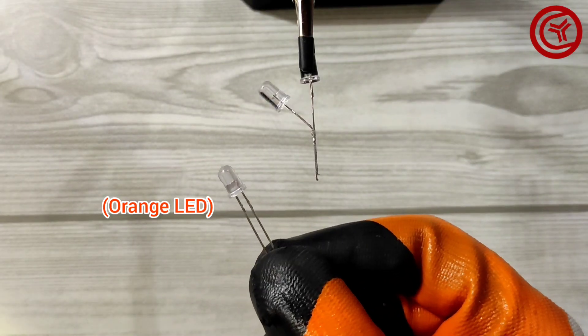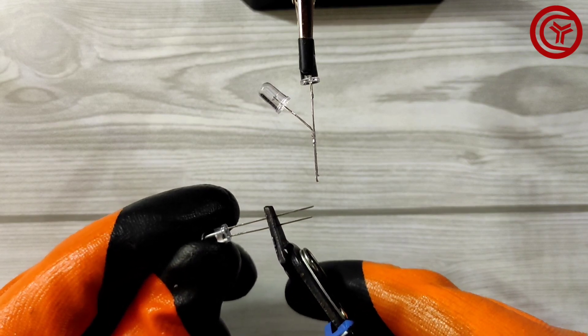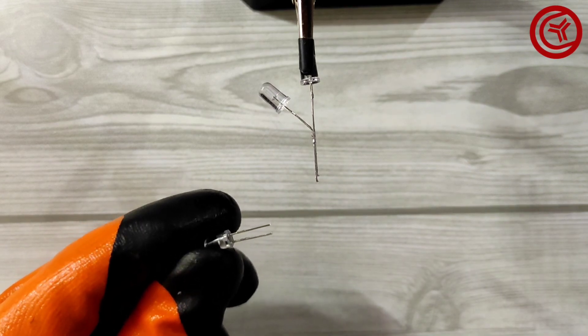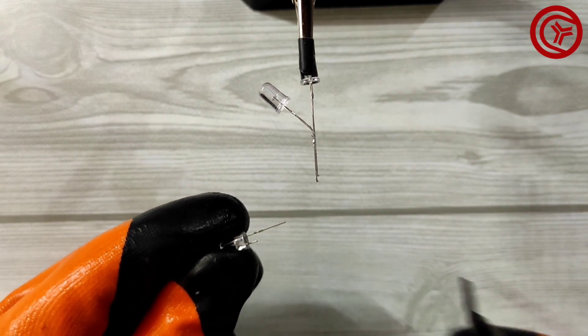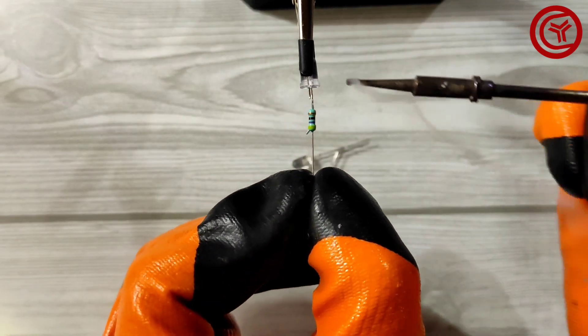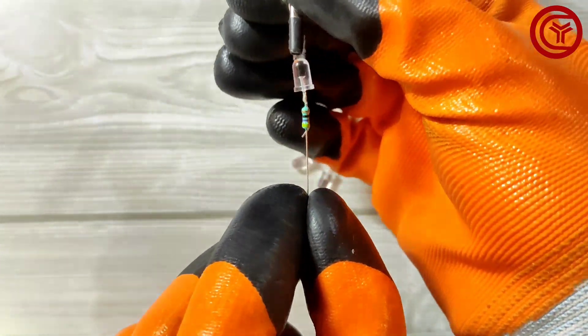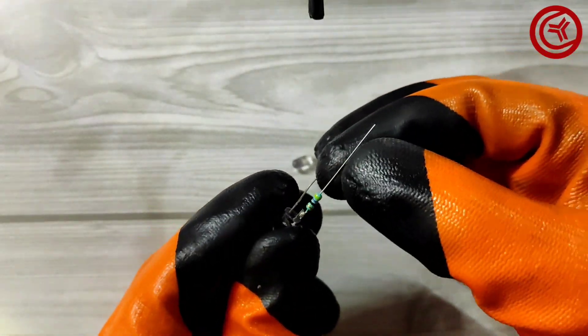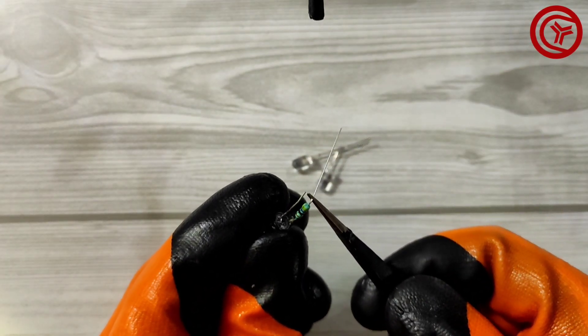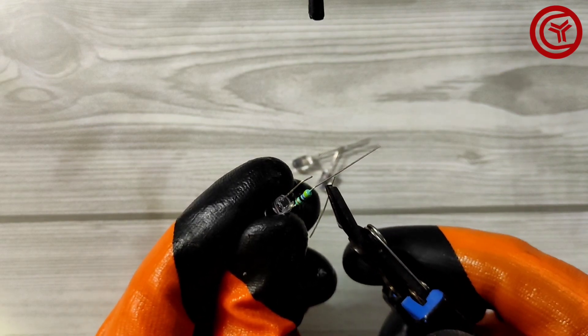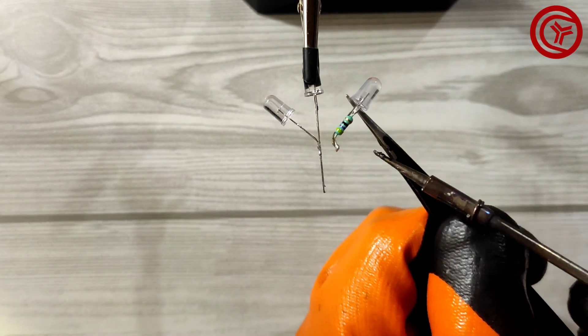Now take orange LED and cut half legs. Also cut positive leg to add 47 ohms resistor. Then bend the legs and cut excess of resistor. Now solder on white LED in parallel.